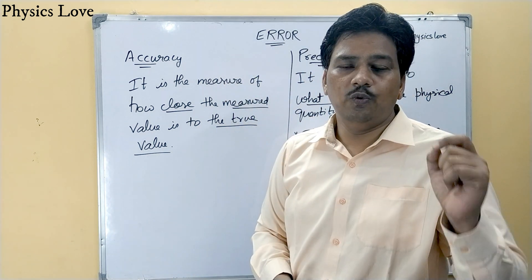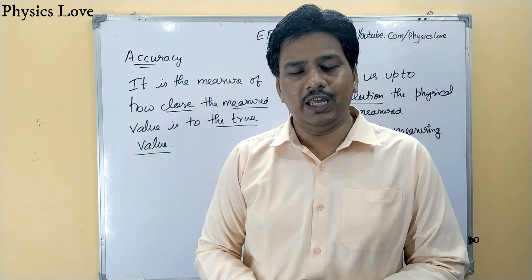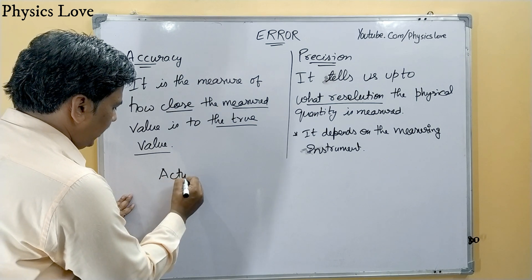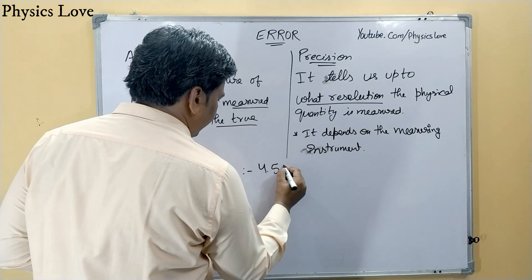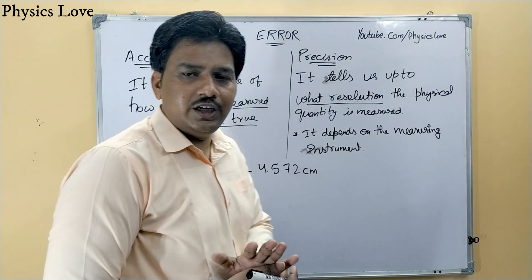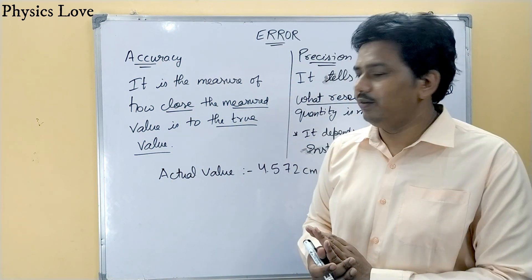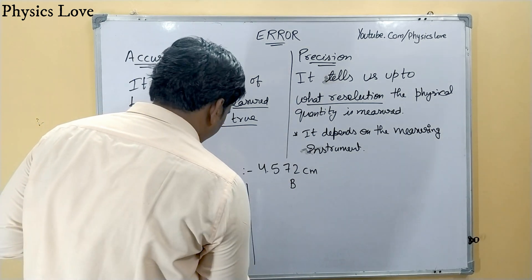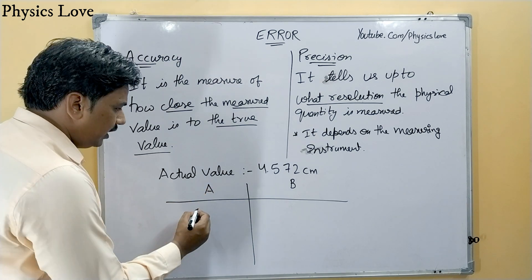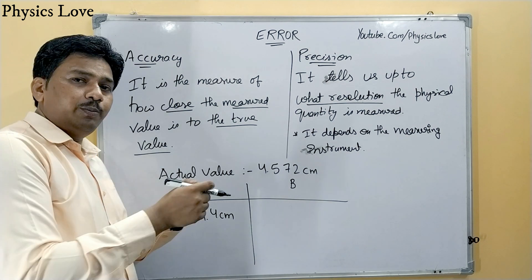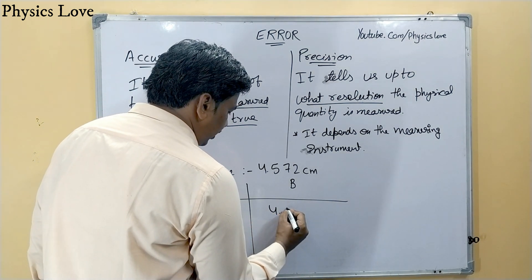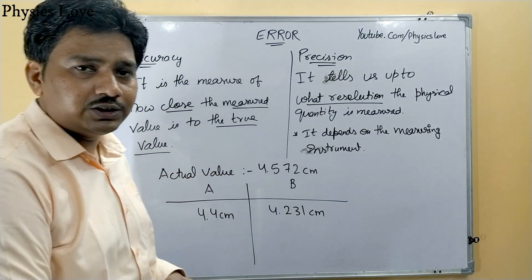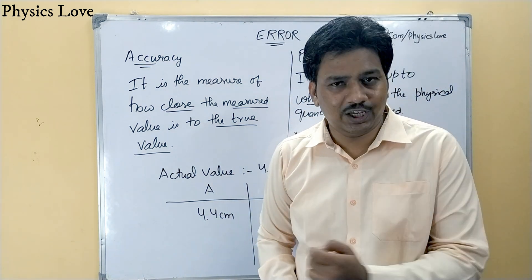Now let us understand accuracy and precision with the help of an example. Suppose you performed an experiment and the actual value of the length is 4.572 cm. You measured the same length using two different instruments — instrument A gave 4.4 cm and instrument B gave 4.231 cm. Now, which result is more precise and which is more accurate?